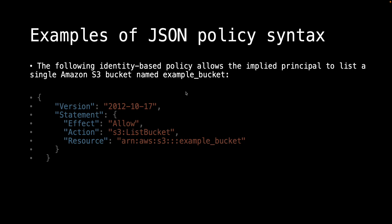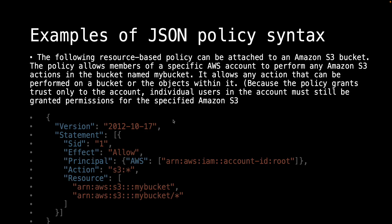The following identity-based policy allows the implied principal to list a single Amazon S3 bucket named example-bucket. Version is defined as a top-level element, then the statement begins. Effect is Allow — you are allowing something. Action is S3 ListBucket, so you are allowing the listing of an S3 bucket. The resource ARN means this policy only applies to that particular resource — the name or ARN of the bucket to which this policy applies.